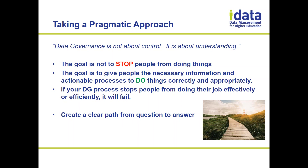Even if the stop comes just from having people climb a mountain before they can write a report or request data — that's something you have to think about. The goal is to give the necessary information and actionable processes to do things correctly and appropriately. If your data governance is stopping people from doing their job effectively, it will fail. You want a clear path forward, and the governance needs to support that — facilitating action, not stopping it, and solving the problems you've defined as the reason you're doing governance.